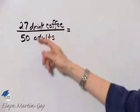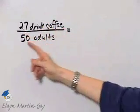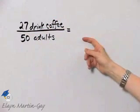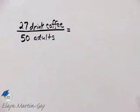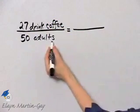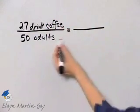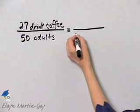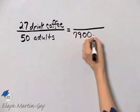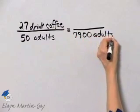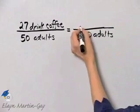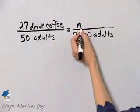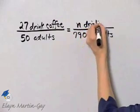Our first rate: 27 drink coffee out of 50 adults. We're told we have a town with 7,900 adults. Keeping units the same in numerators and denominators, 7,900 adults goes in the right-side denominator, and we want to know how many drink coffee — so I'll let that be n drink coffee.